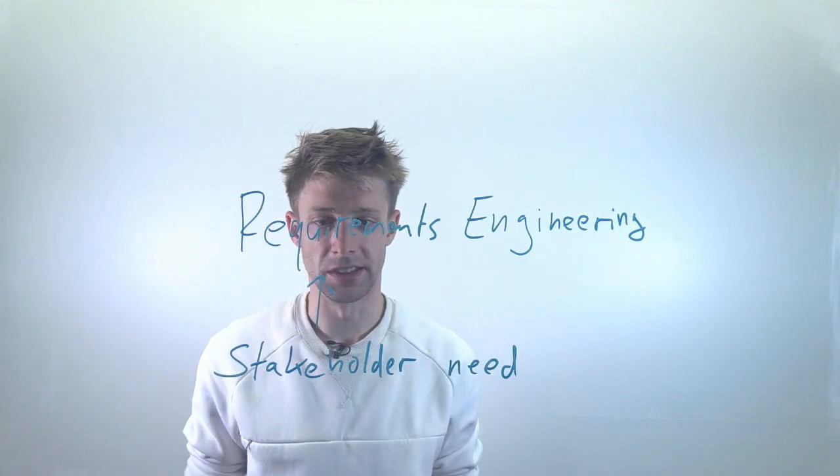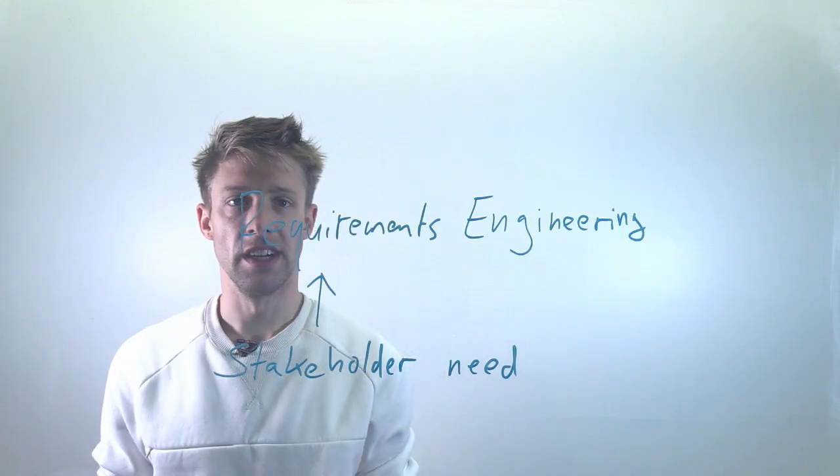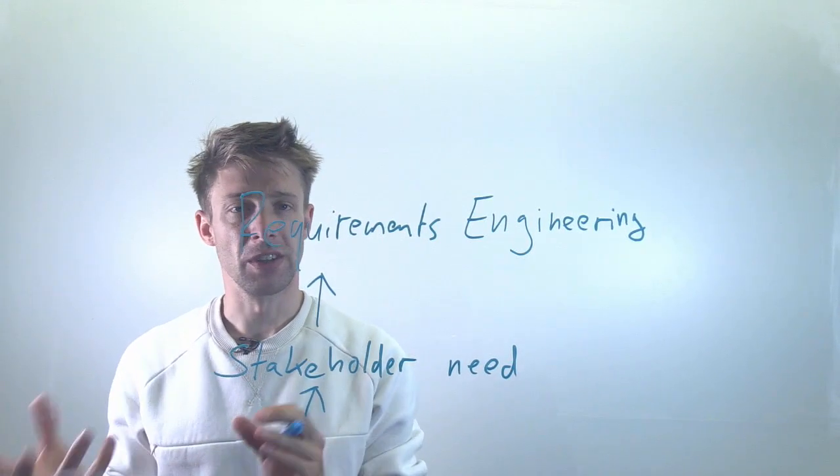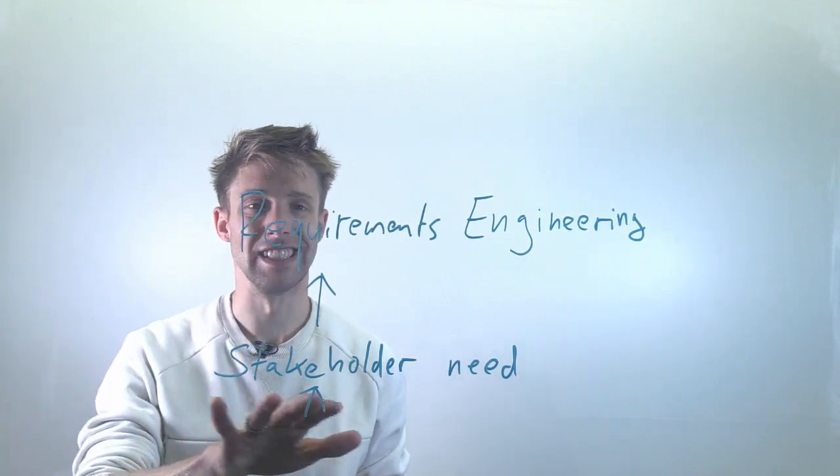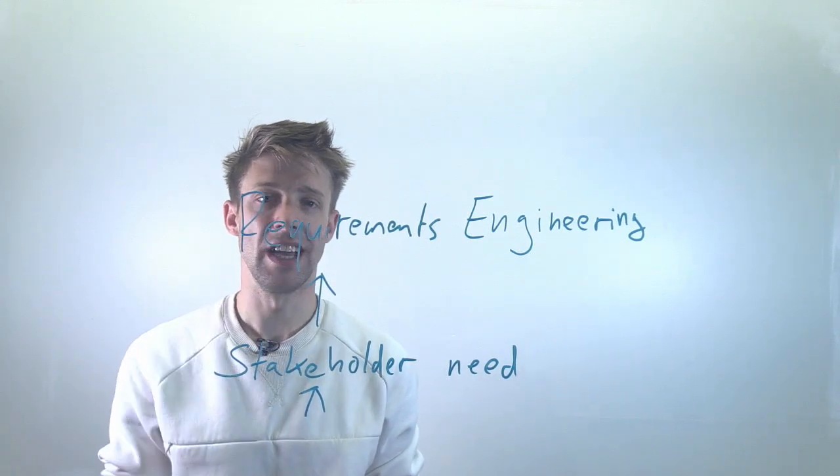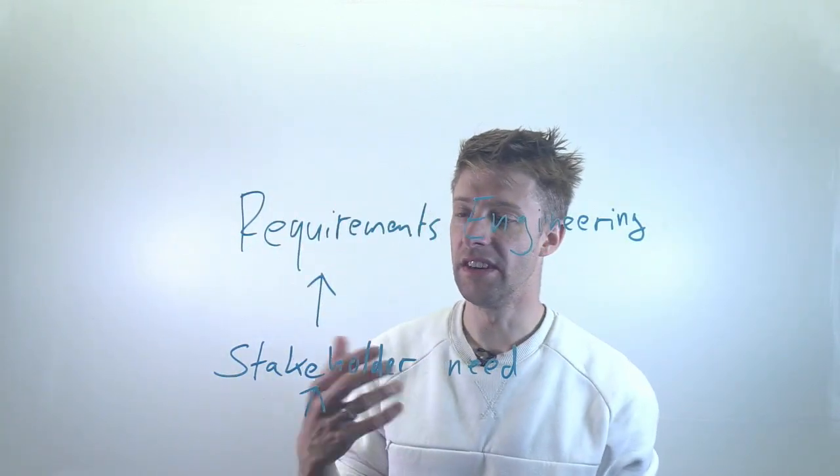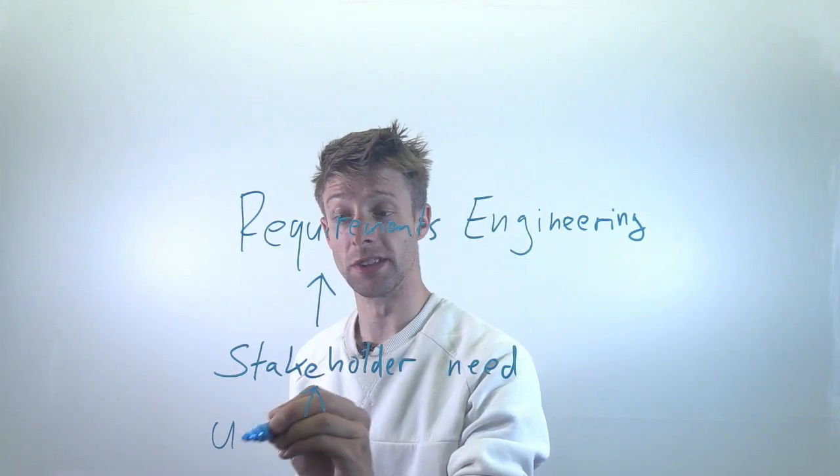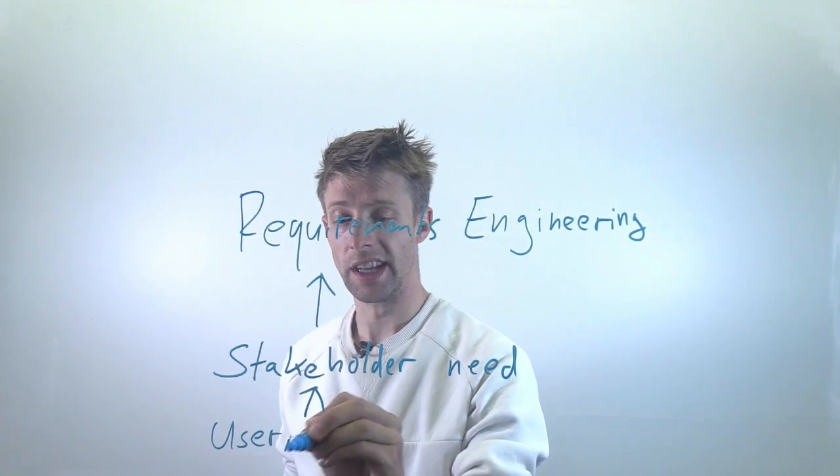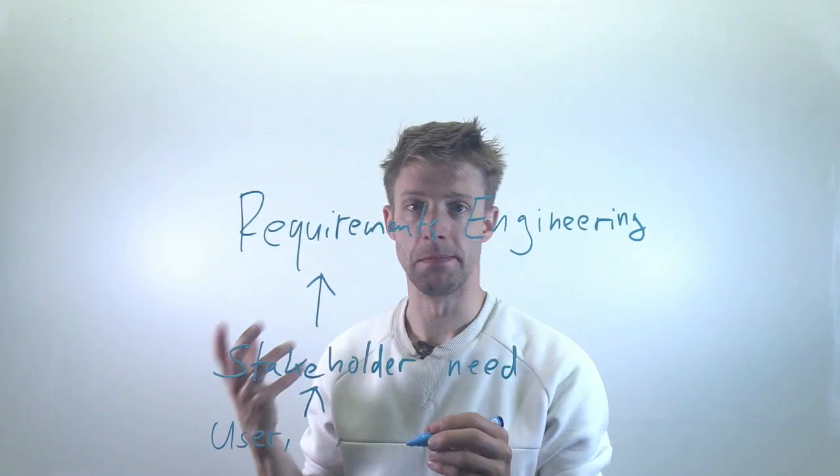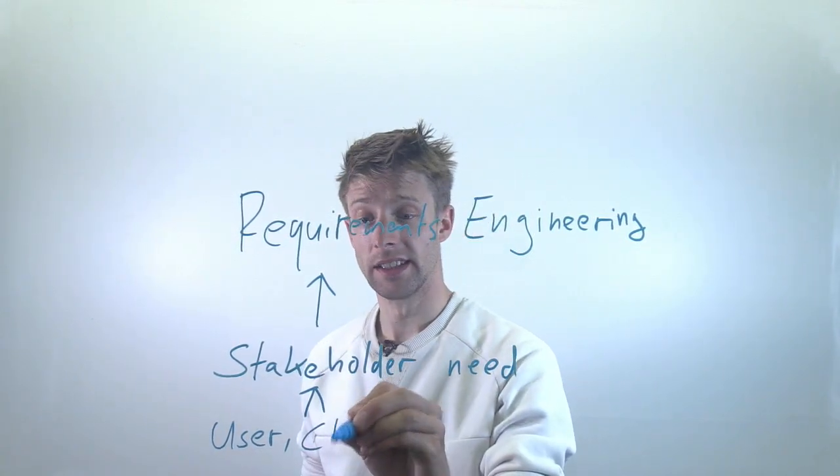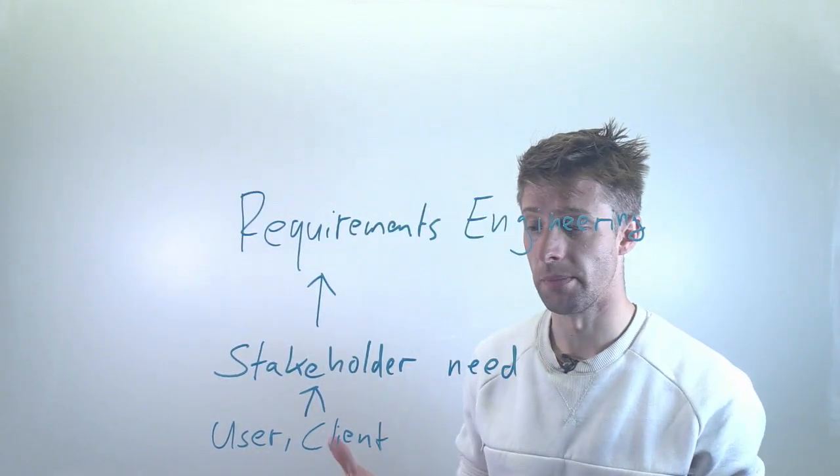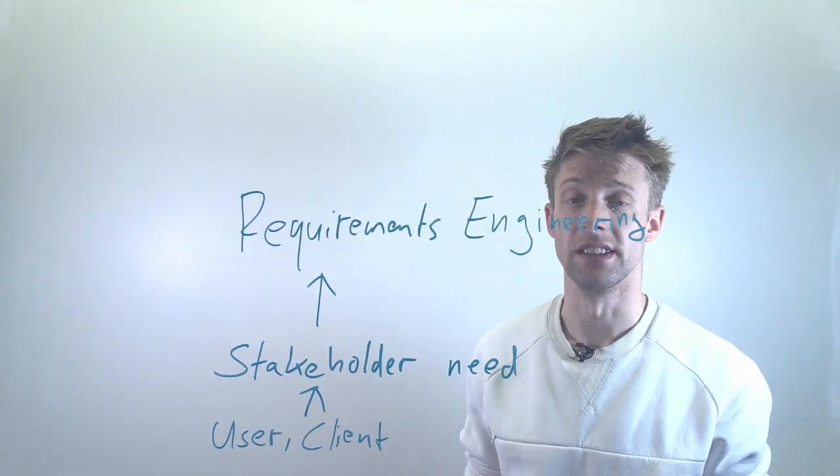Stakeholders - it's a rather complicated term - can be everyone and every organization, every entity that somehow has a stake, has some kind of relation and need, is influenced by the overall system. The typical stakeholders are, for example, users and administrators, the clients - so if you have a person or an organization that orders something they of course have an interest in the software. It might be the developers of the system or the ones that have to maintain it later on.